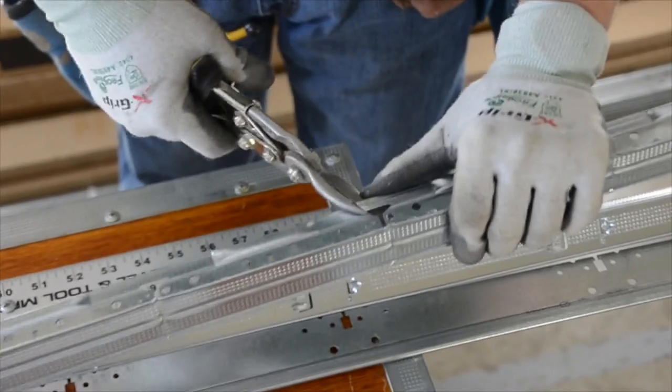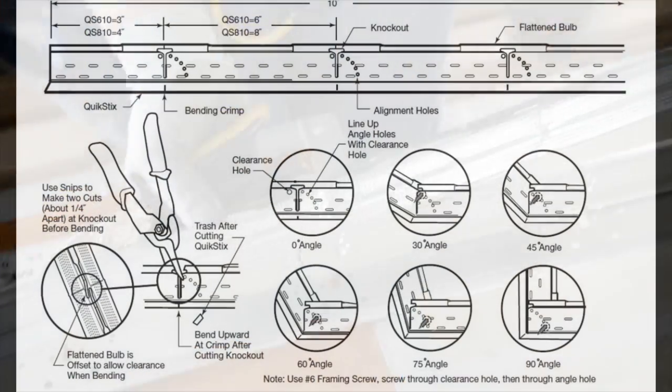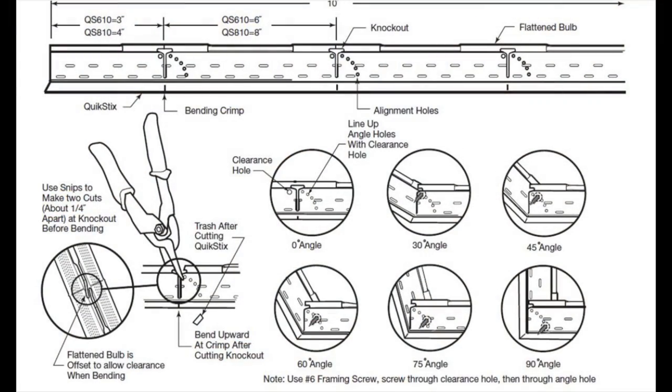Simply snip at one of the six inch or eight inch on center golf t-shaped knockouts, then bend to the appropriate alignment hole for a 30, 45, 60, 75, or 90 degree bend.